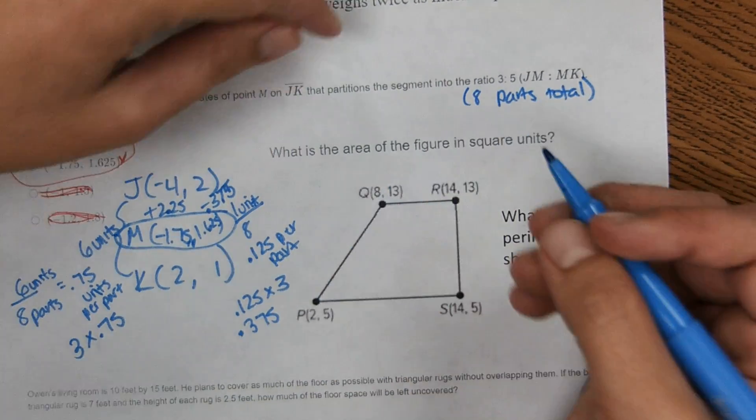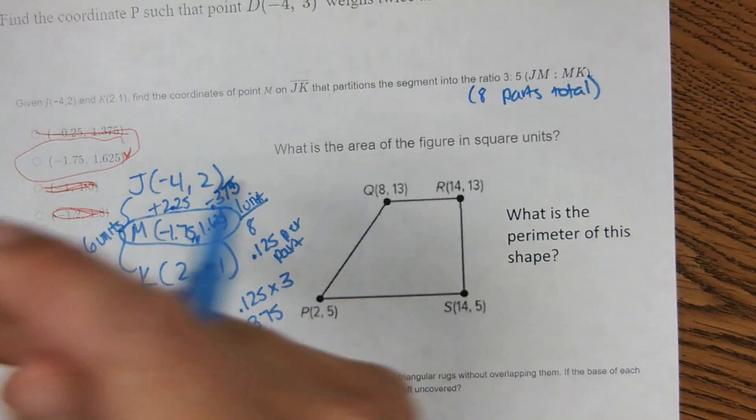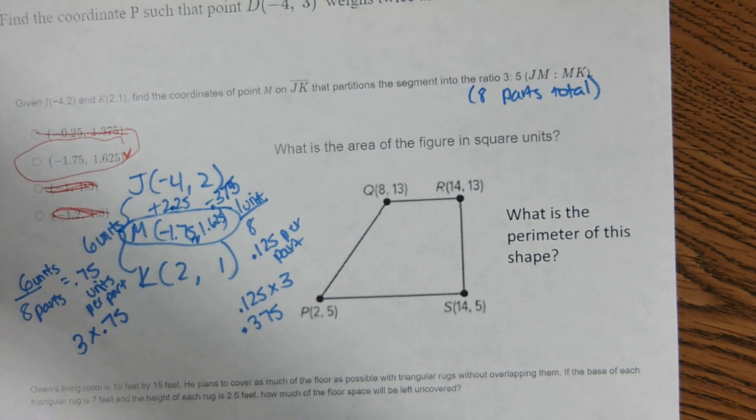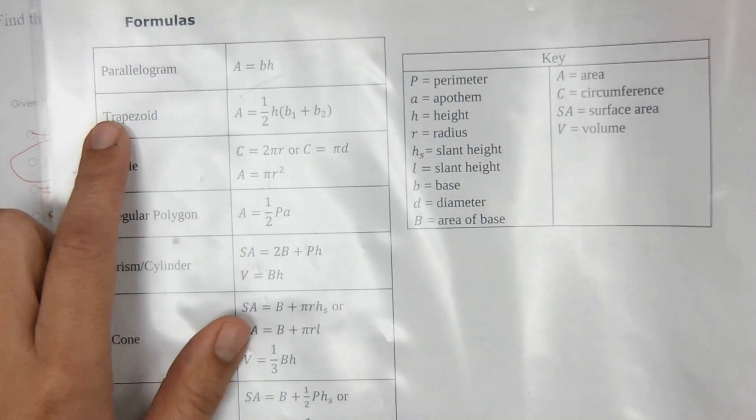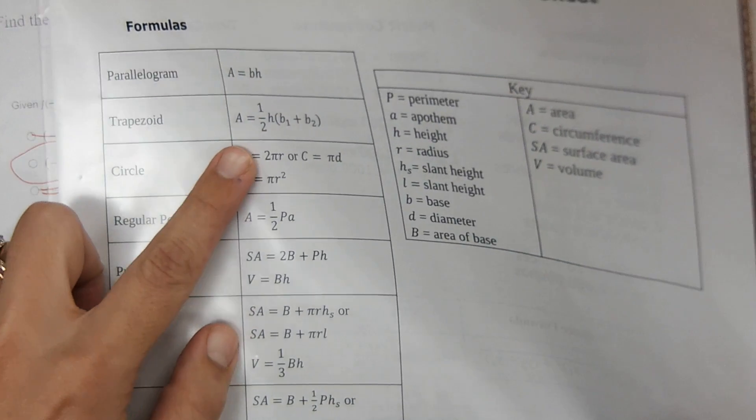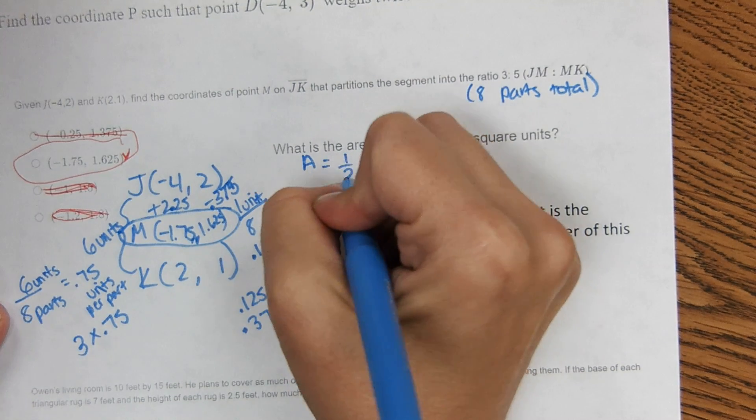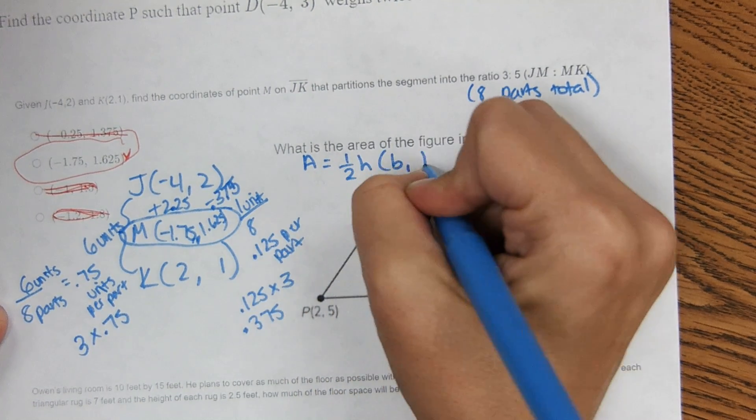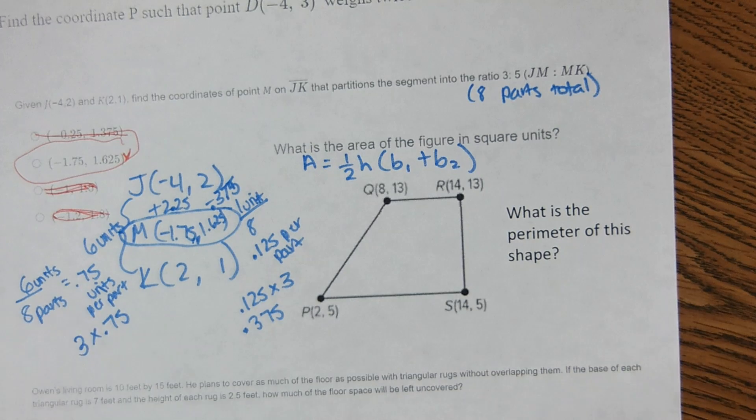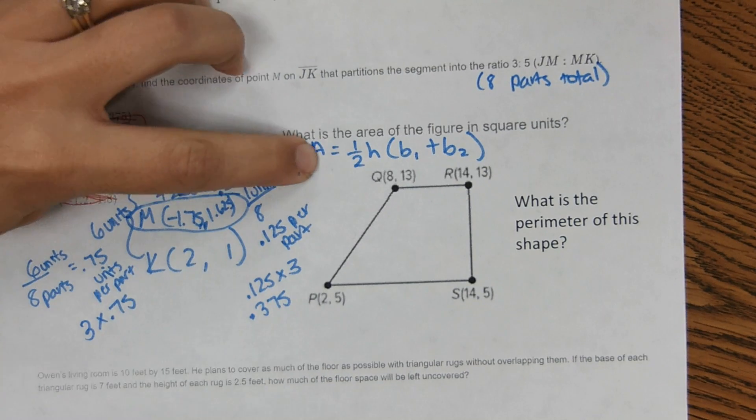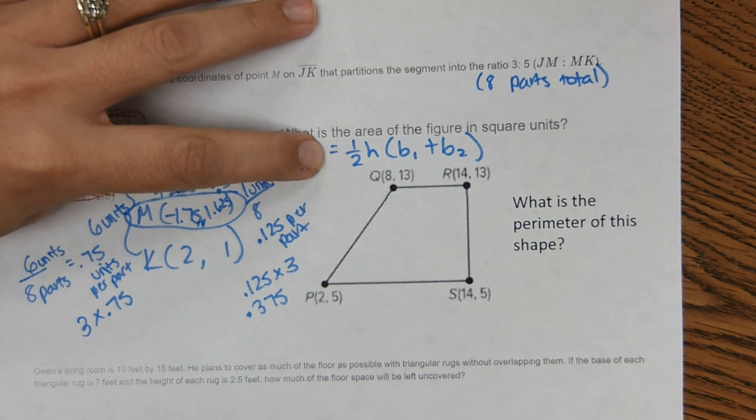Okay, next one. Trapezoid. What is the area of the figure? For a trapezoid, the area of a trapezoid is on the reference sheet. So if you don't know that equation, it's right here. Trapezoid. And that's the formula. And we're going to write that down. Area of a trapezoid is 1 half height, B1 plus B2.